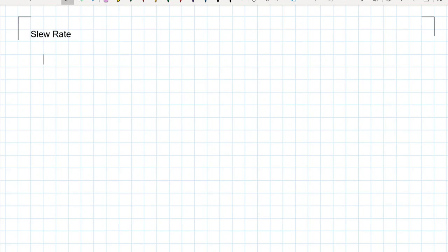Due to slew rate. Slew rate is how rapidly does the output change in response to the input. How rapidly does the output change in response to the input?